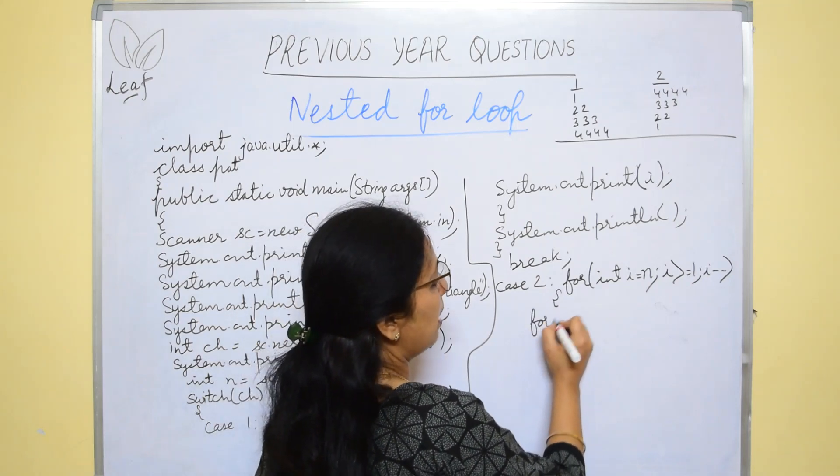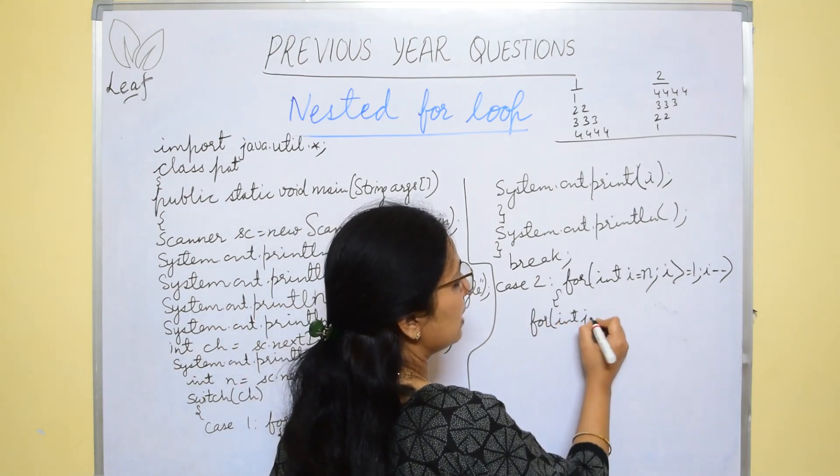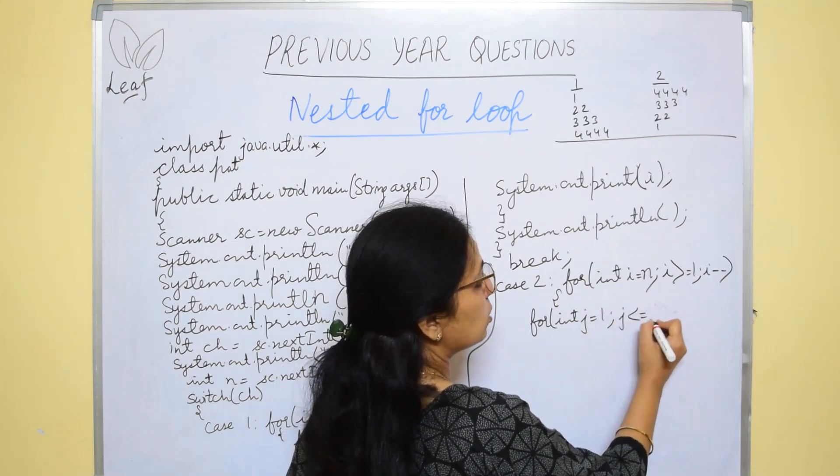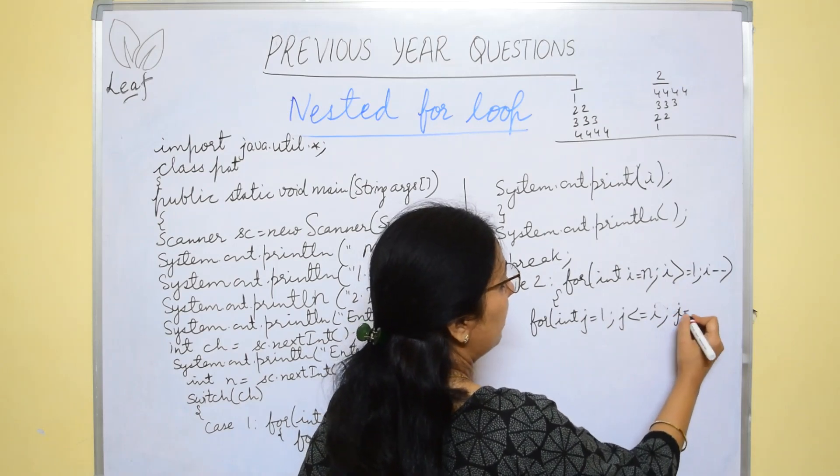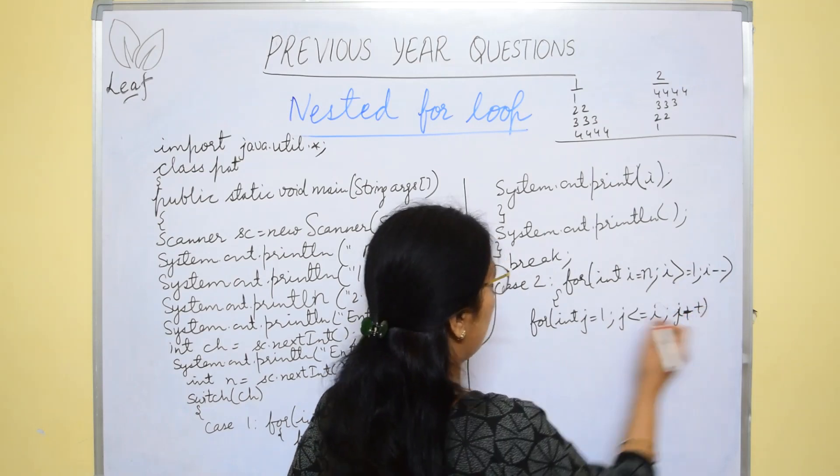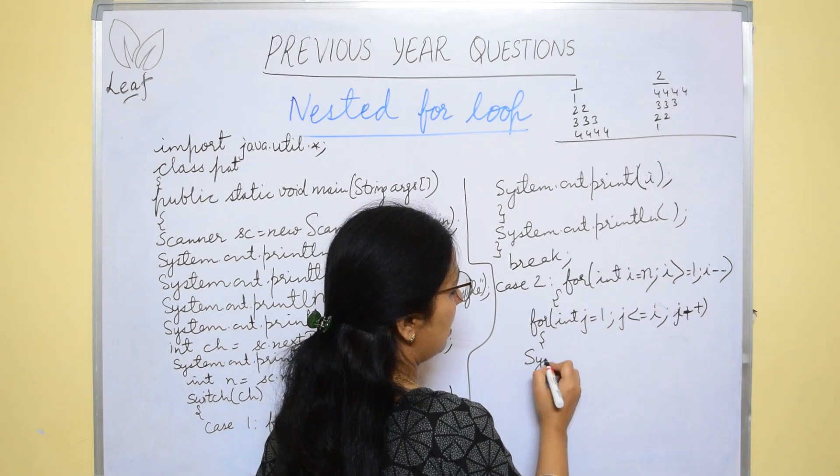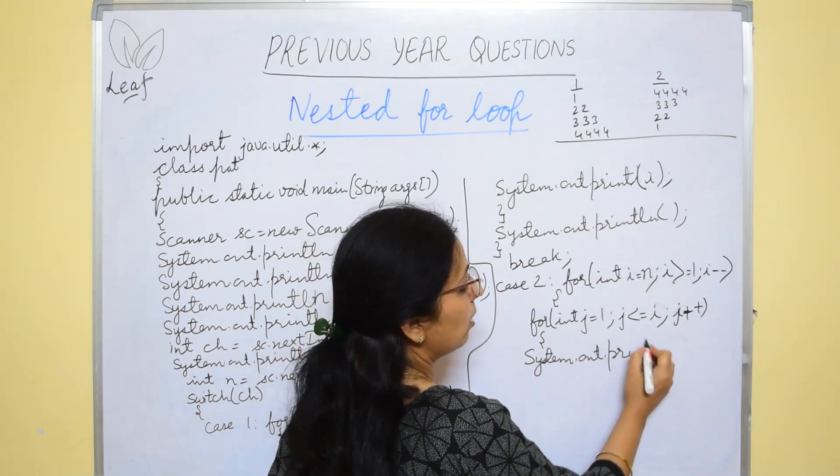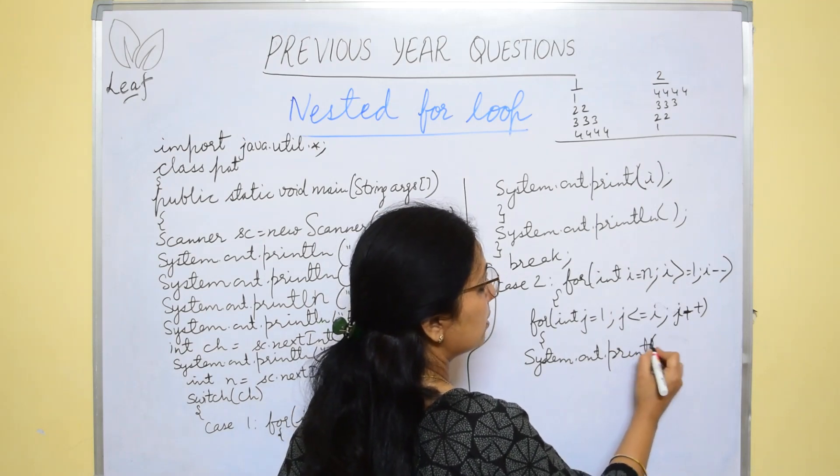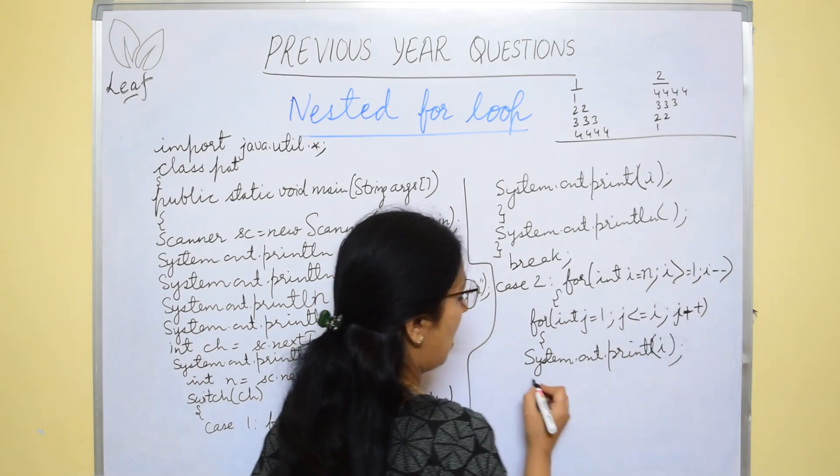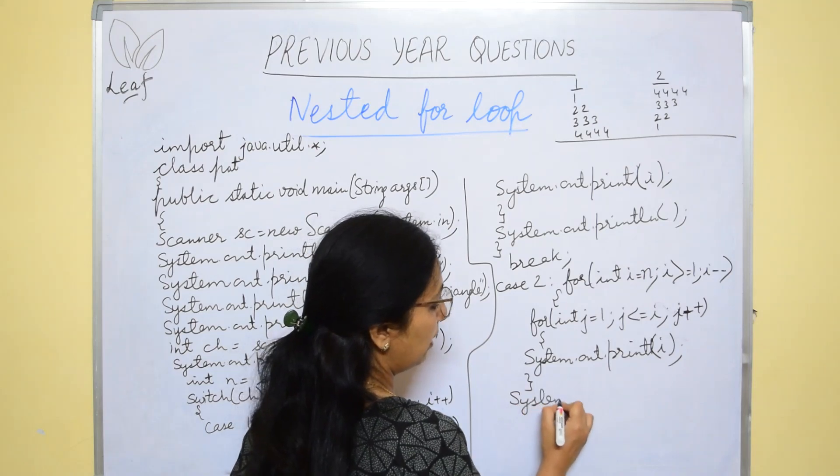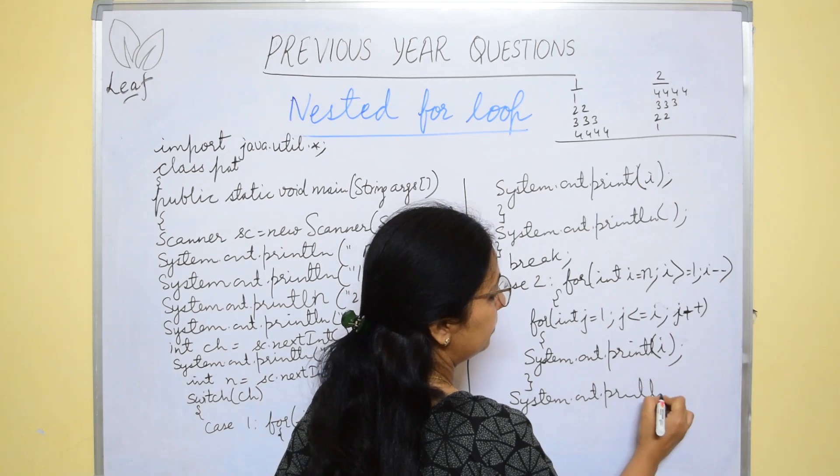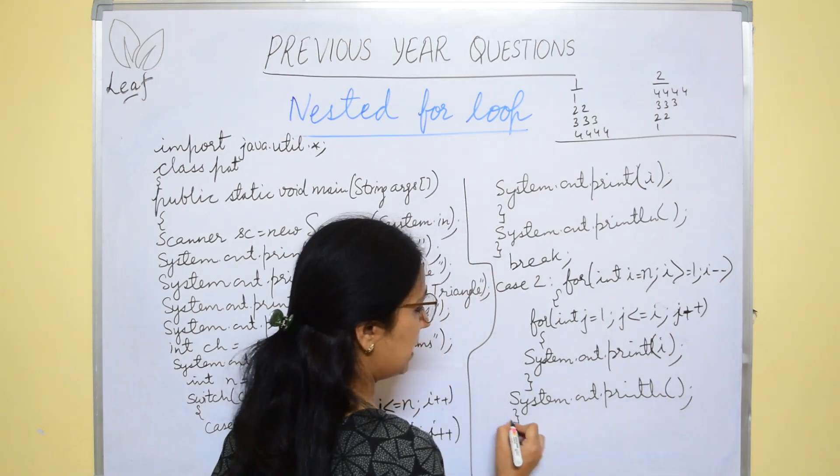After this the inner loop you will start. I int j equals to 1, j less than equals to i, j plus plus. And again here the printing variable will be the i variable not j. Print i. After completion of this you will give the print ln statement to shift the cursor to the next line.